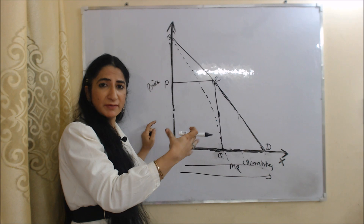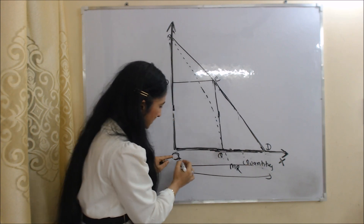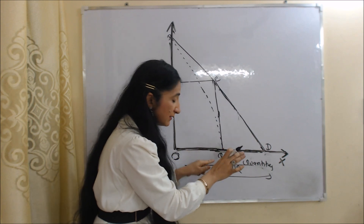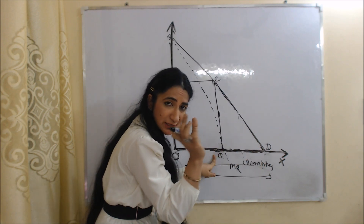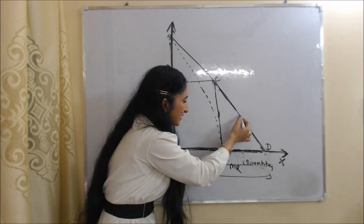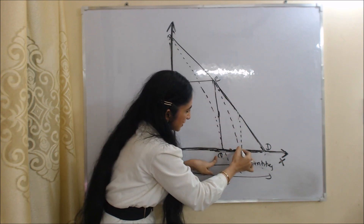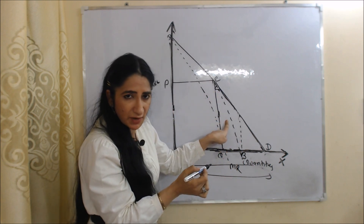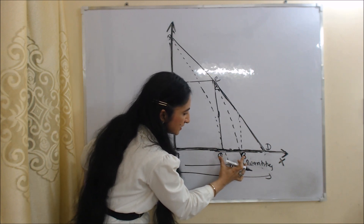As firm A starts production, profit increases, and seeing that, firm B enters the market. Now available market demand is equal to QD — total market demand was OD, OQ is already being produced, so remaining demand is only QD. B will produce half of QD. Production of B is QB. This dotted line represents the marginal revenue curve of firm B, and B will produce QB, which is half of available demand QD.